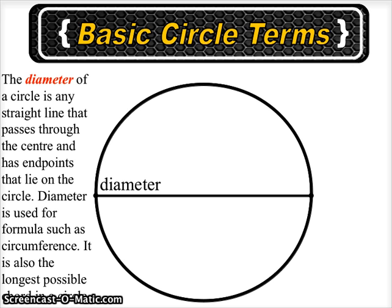The diameter of a circle is any straight line that passes through the center and has endpoints that lie on the circle. Diameter is used for formulas such as circumference.